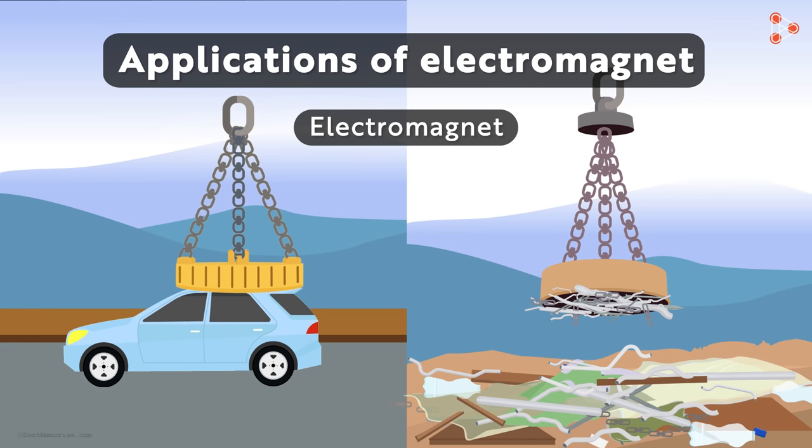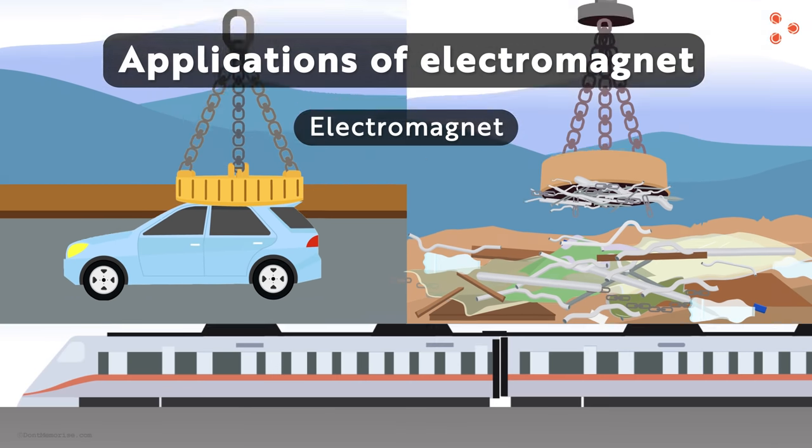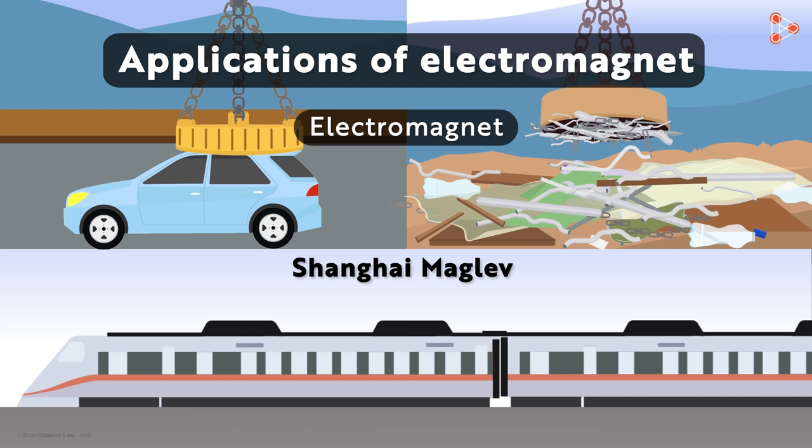Now what if I tell you that they are used in the fastest trains around the world? Yes, the Shanghai Maglev train is touted as the world's fastest train and it works on the concept of electromagnetism.